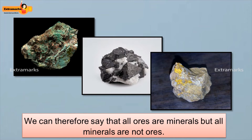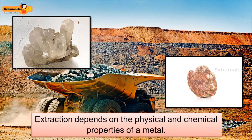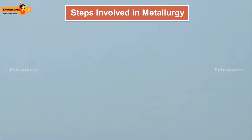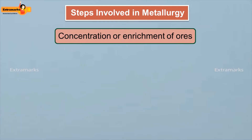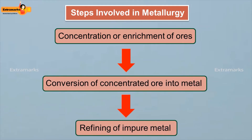We can therefore say that all ores are minerals, but all minerals are not ores. The process of obtaining metals from their ores is called extraction. Extraction depends on the physical and chemical properties of a metal. In general, a metallurgical process consists of three main steps: concentration or enrichment of ores, conversion of concentrated ore into metal, and refining of impure metal.